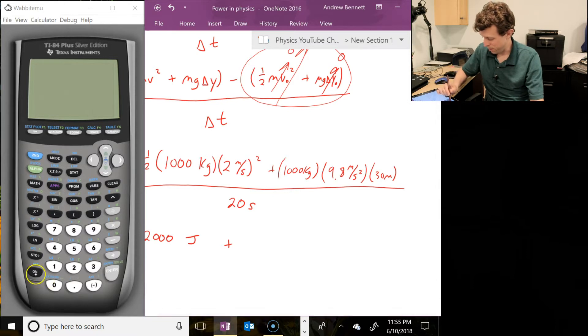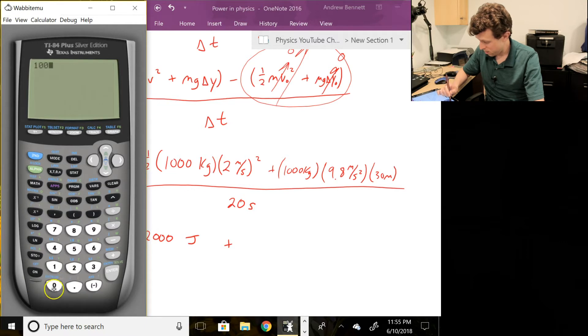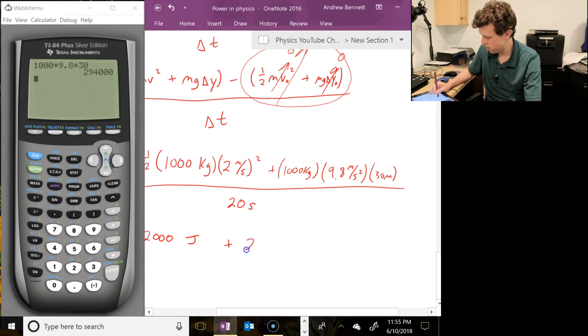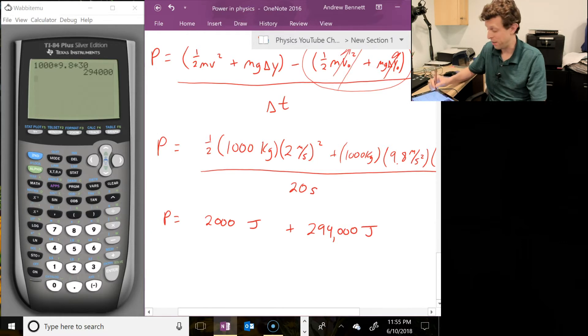Let's see, I'm going to go ahead and do that on here. I'm worried I'm going to miss a decimal on this one. 1,000 times 9.8 times 30. Okay, we got it all. It's 294,000 joules. All right, and we can see that the kinetic energy here just doesn't make that much of a difference. It's the potential energy that's where it's at, and that makes sense. The elevator, we expect most of the work is moving things up and down, not getting them moving fast.